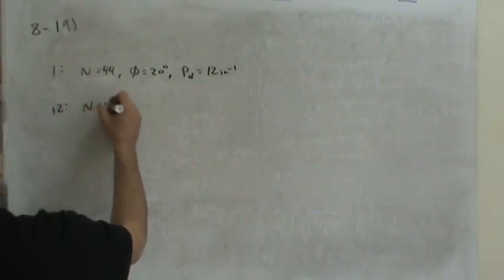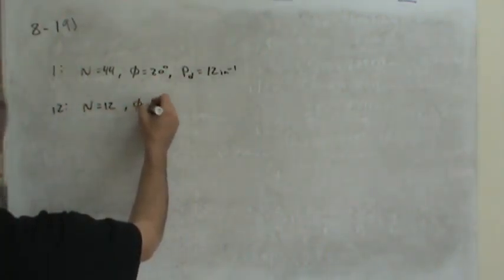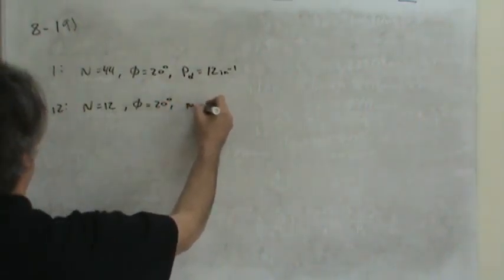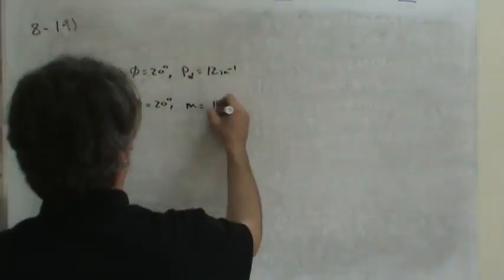Problem 12 was a metric gear, and problem 12 had, let's see, N equals 12 teeth. Again, a 20 degree pitch angle, and a metric module of 12 millimeters.